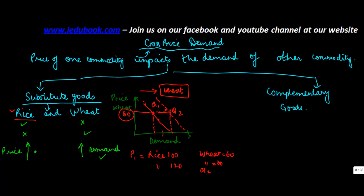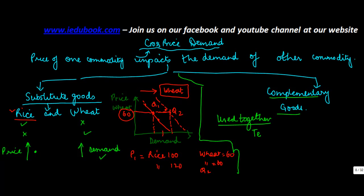Now let's see the second case — complementary goods. Complementary goods are the ones which are used together. Let's take the case of tea and sugar. If the demand for tea increases, the demand for sugar will also increase.